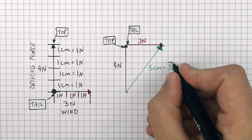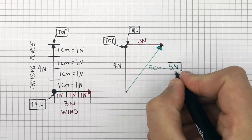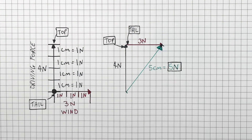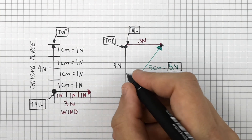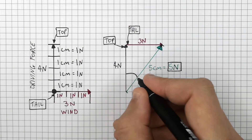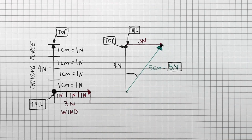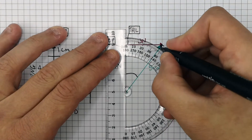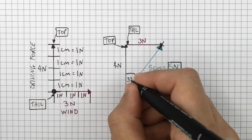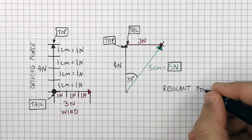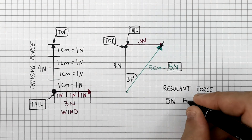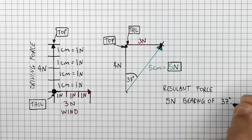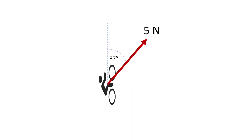Remember, resultant forces are a vector quantity, so we have the magnitude of five Newtons — but what about the direction? We use a protractor to work out the bearing of the direction in which the resultant force is acting, and that gives us 37 degrees. So the resultant force acting on the cyclist is five Newtons with a bearing of 37 degrees.